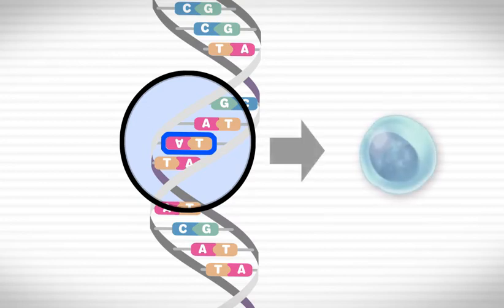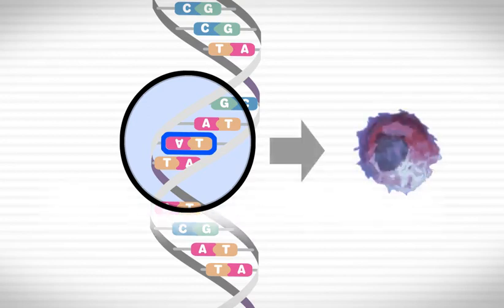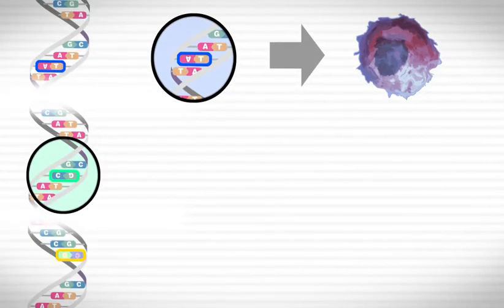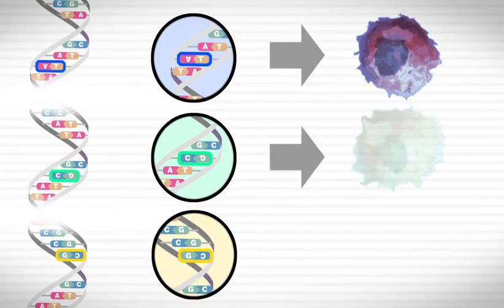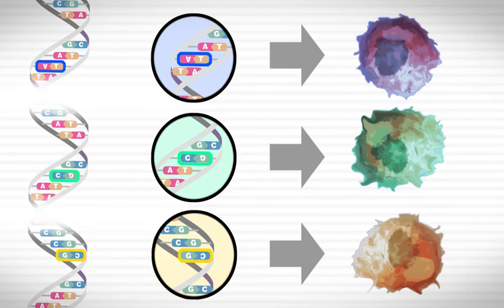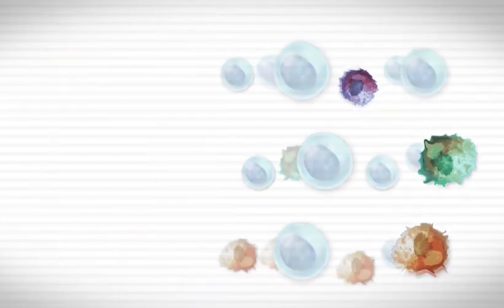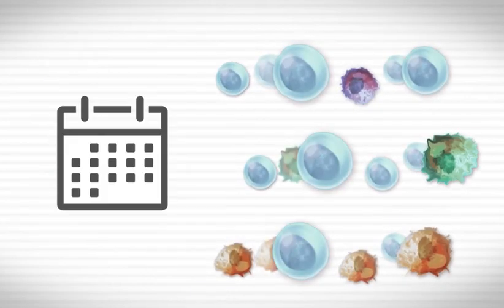Different mutations produce different types or clones of myeloma, and there are several mutations that can cause plasma cells to transform into myeloma cells. The different myeloma clones can change over the course of the disease.